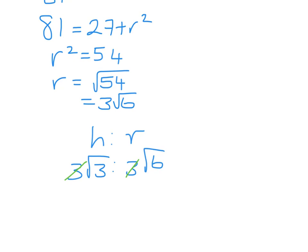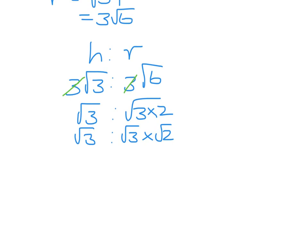And if I think of root 6 as root 3 times 2, so root 3 to root 3 times root 2, the ratio simplifies to 1 to root 2.